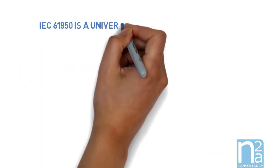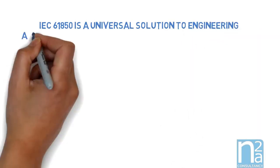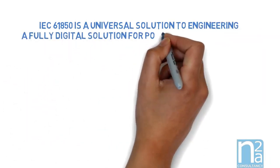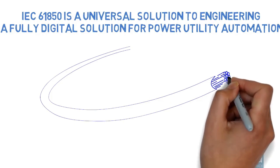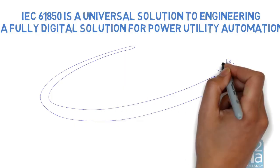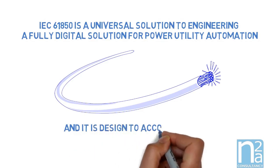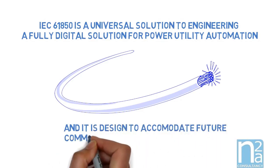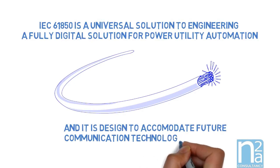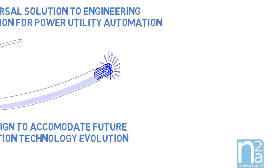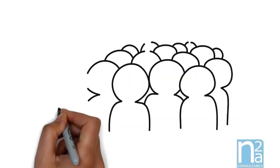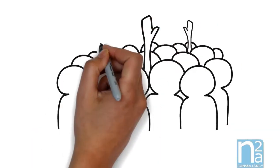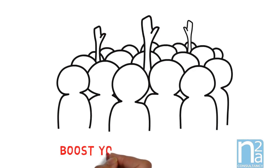To make a resume, IEC 61850 is a universal solution to engineering a fully digital solution for power utility automation. It is built in a way which can accommodate the future evolution of communication technology. It is allowing easy reconfiguration of the system without physical intervention on the ground. It is allowing multi-vendor solutions. Indeed, there is a lot more to say about IEC 61850, which is a complex standard of thousands of pages, but we hope this helps.